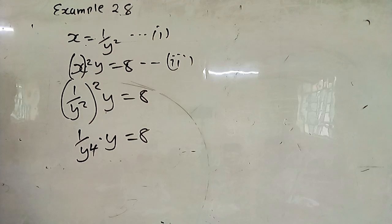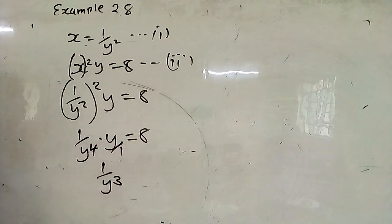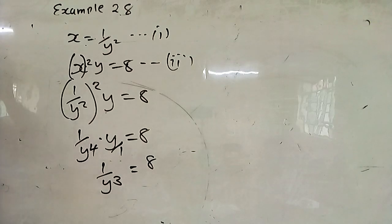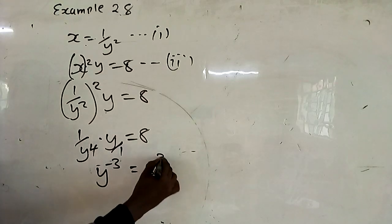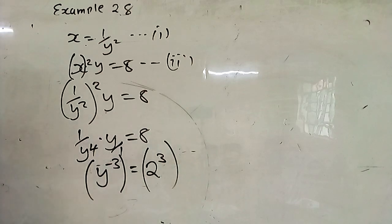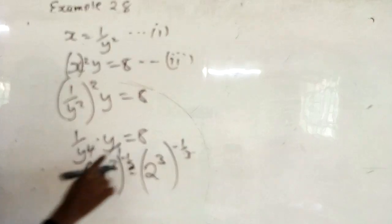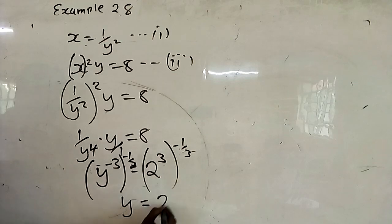So 1 over y³ equals 8. That is the same as y raised to negative 3 equals 8. And 8 is the same as 2 raised to power 3. You multiply both sides of the equation by negative 1 over 3 to get rid of the negative 3, so you remain with y equals 2 raised to negative 1.